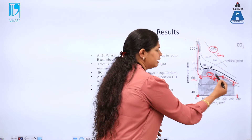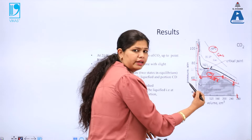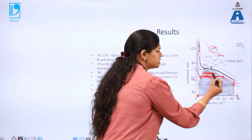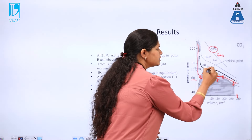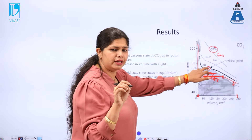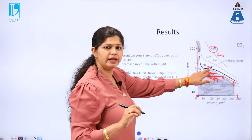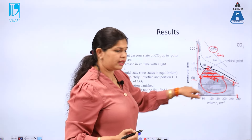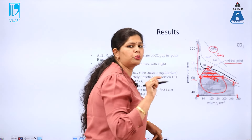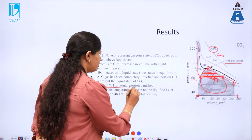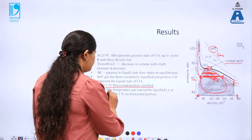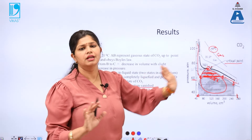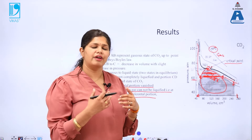The same thing happens if you increase the temperature. But at 31.1 degree Celsius, this change from liquid to gaseous state — the horizontal line — keeps decreasing and comes to a point where only a single point exists at which the liquid state is present. So in Andrews isotherm, there is an entire region where liquid and vapor coexist, and this critical point is the last point at which liquid and vapor are coexisting. At 31.1 degree Celsius the horizontal portion vanishes, and above this temperature — at 35.5 and 48 degree Celsius — the gas cannot be liquefied. These are the findings of Andrews isotherm.